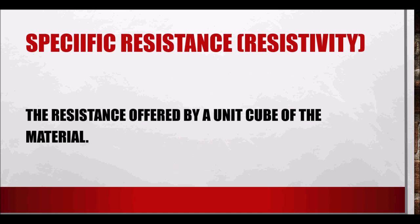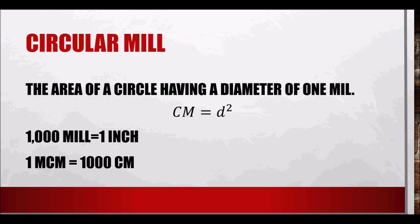Specific resistance, or resistivity, is the resistance offered by a unit cube of the material. For example, one cubic meter of copper has an equivalent resistance value that is constant for that material. The resistivity of copper is not equal to the resistivity of aluminum — these values are determined through testing. Circular mil is the area of a circle having a diameter of one mil; wire sizes are typically given in circular mils.